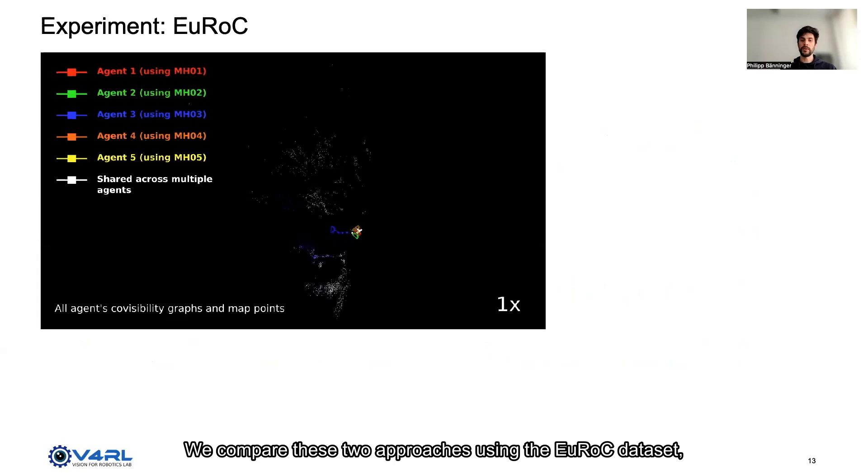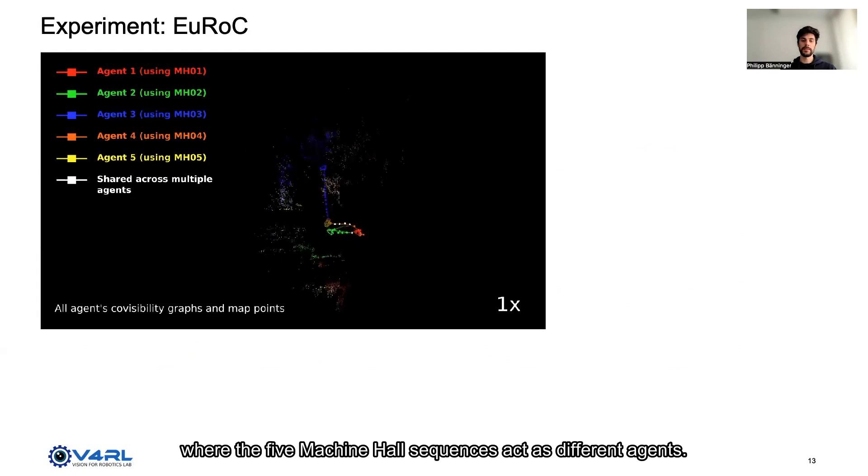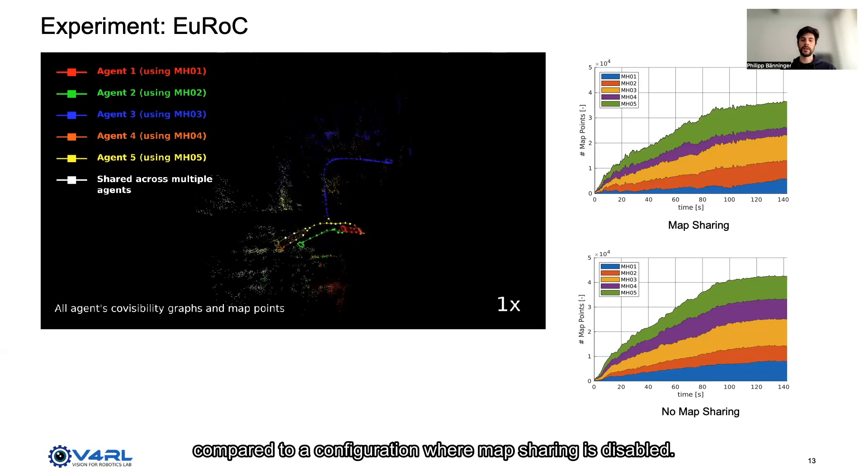We compare these two approaches using the EuRoC dataset where the five machine hall sequences act as different agents. Using map sharing, the total map size is roughly 15% reduced compared to a configuration where map sharing is disabled. This is attributed to the limited overlap between agents' trajectories.